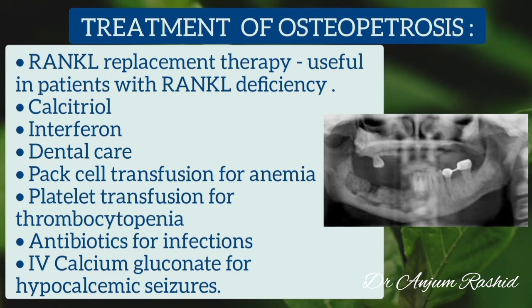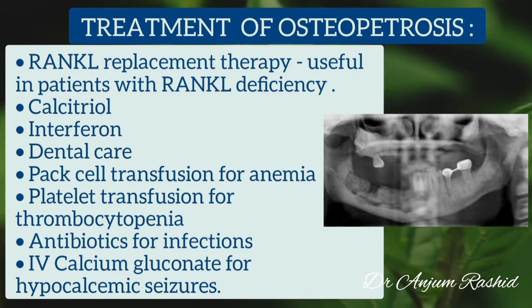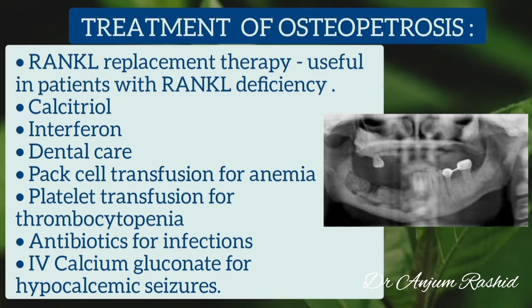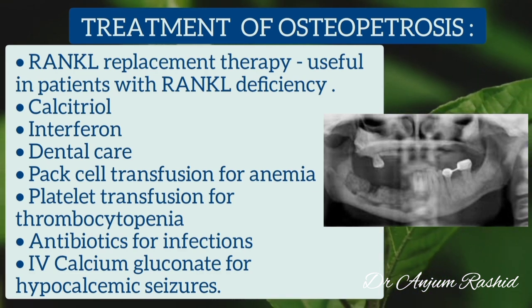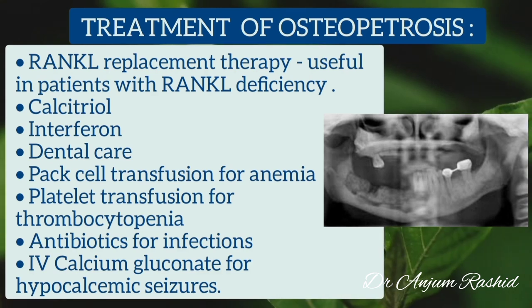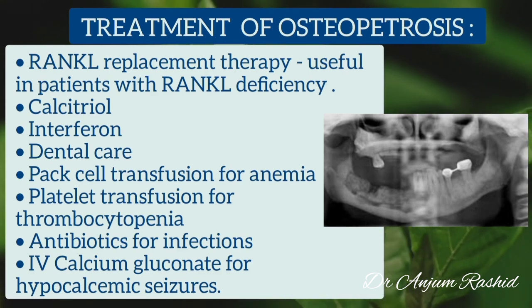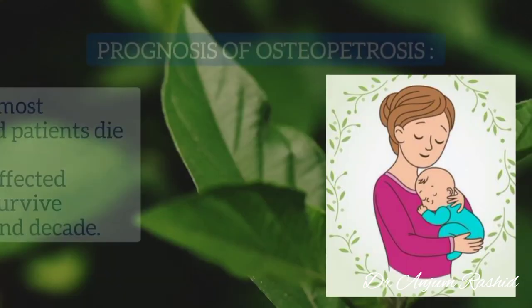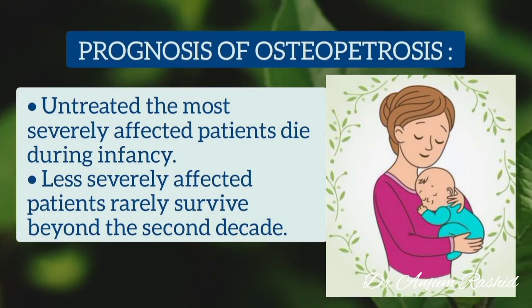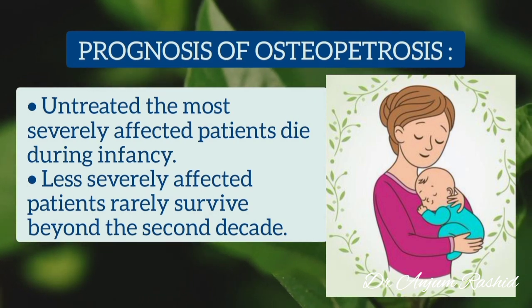RANKL replacement therapy — receptor activator of nuclear factor kappa-B ligand cytokine — is useful in patients with RANKL deficiency. Calcitriol and interferon gamma are also useful in osteopetrosis. Dental care is important. Red cell transfusion should be given for anemia, platelet transfusion for thrombocytopenia, and antibiotics for infections. For hypocalcemic seizures, IV calcium gluconate should be given.